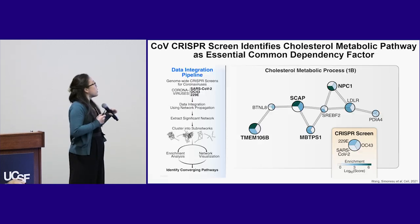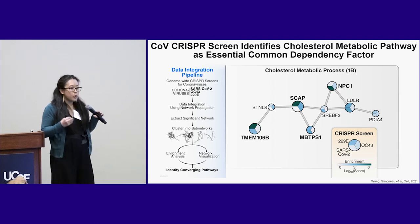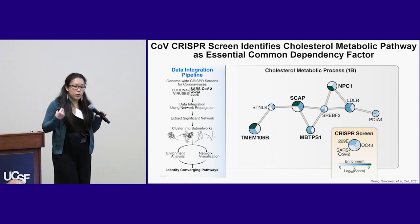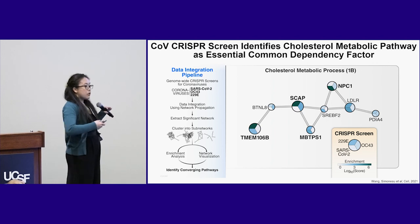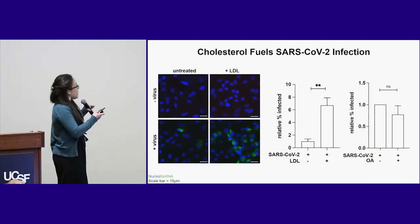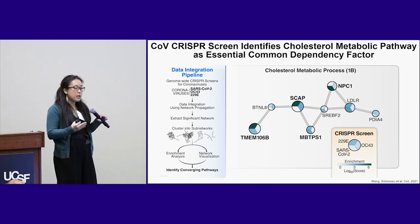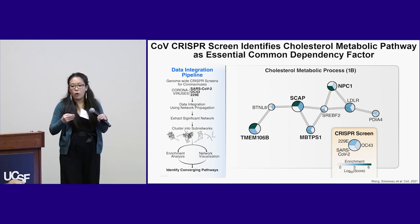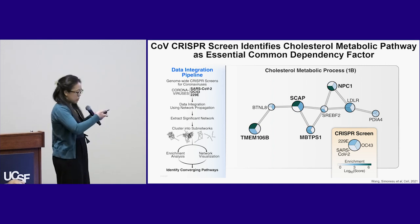One of the first sets of experiments that we did was a collaboration with Andreas Pushnik at the Biohub. We did a genome-wide CRISPR screen of SARS-CoV-2 in addition to two common cold coronaviruses, 229E and OC43, looking for host factors required for each of these viruses' infections. In collaboration with the Krogan lab, we performed a network analysis to look for common pathways used by all three viruses, and it turns out one of these pathways was the cholesterol metabolic pathway.